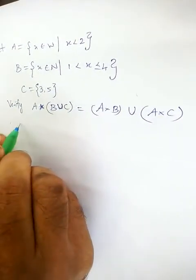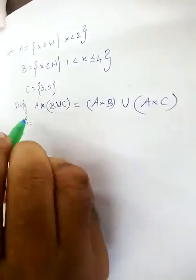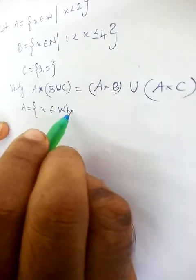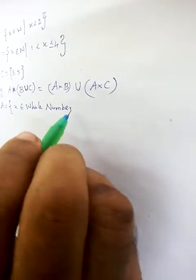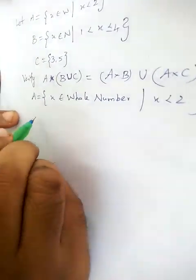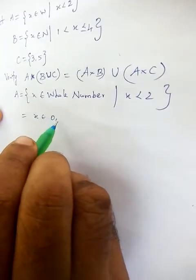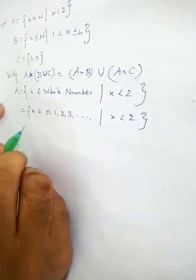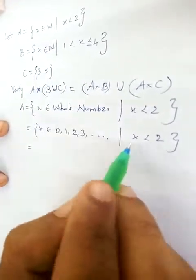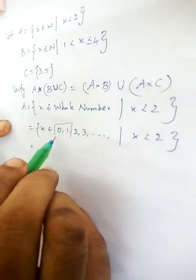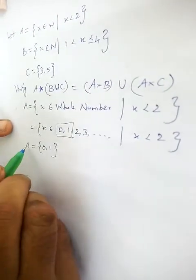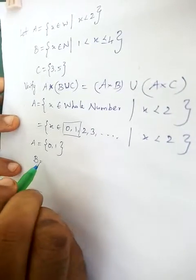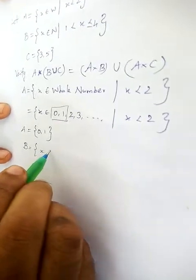First of all we have to find the value of A and B. For set A, x is a whole number and also x is less than 2. Whole numbers are 0, 1, 2, 3, etc. Since it should be less than 2, set A equals {0, 1}.